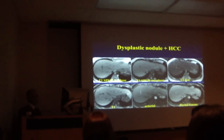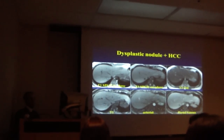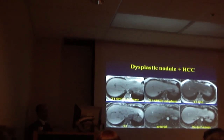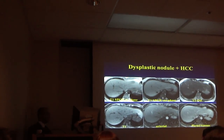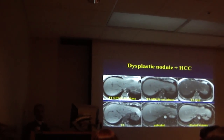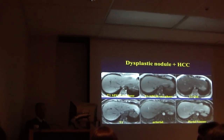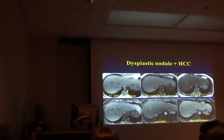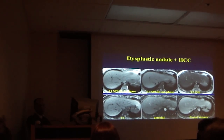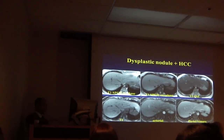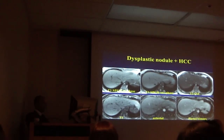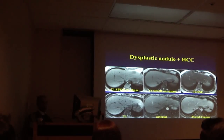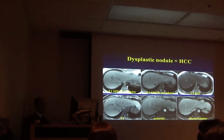Just based on images, we said this is a dysplastic nodule with an HCC in it. He asked why, and I said it demonstrates washout. And why is it a dysplastic nodule with HCC? Because not all of it demonstrates enhancement — this part does not — and not all of it demonstrates washout. So there are two entities here. He went in and took it out, and it actually was dysplastic nodule with HCC.